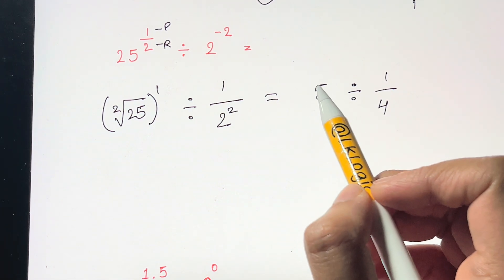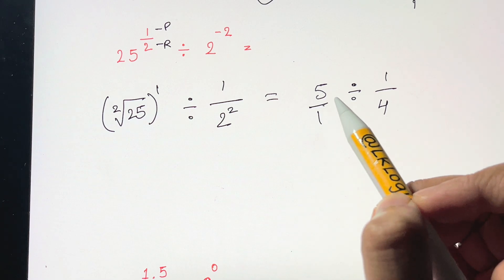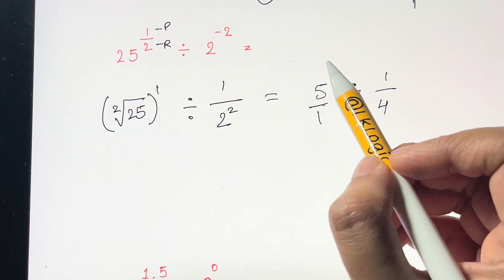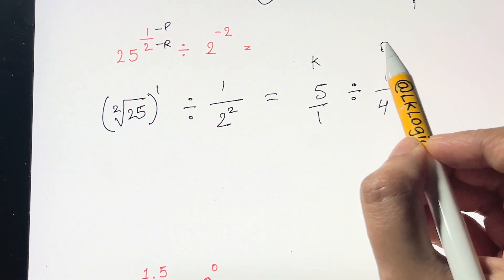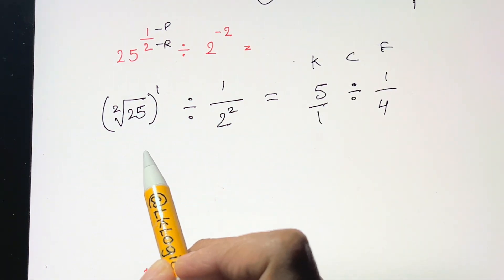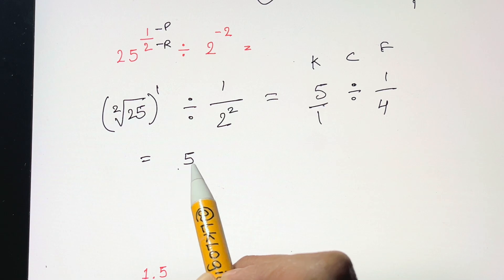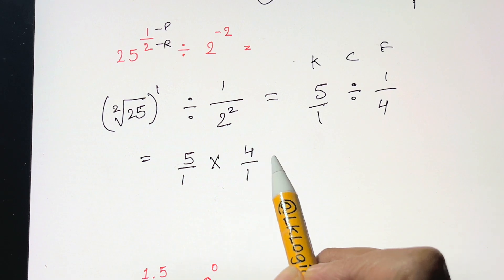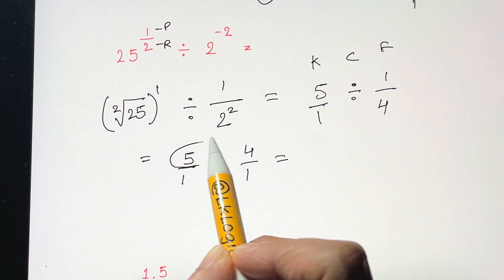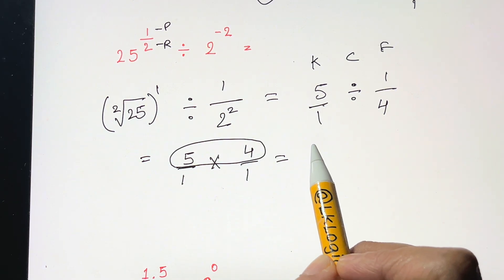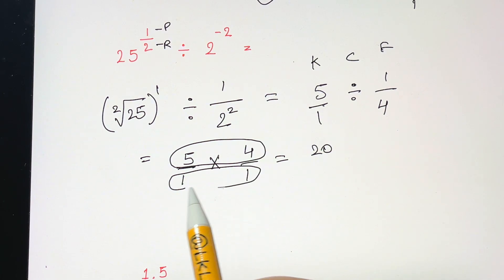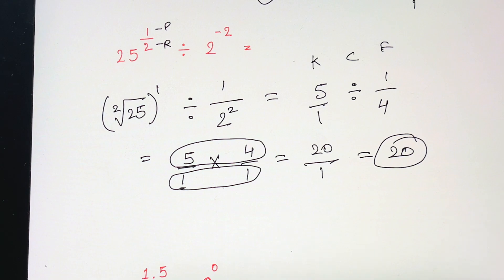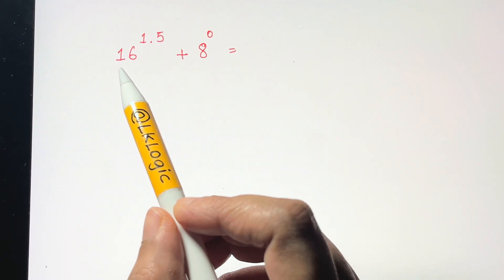Now we have division of fractions. We'll use the KFC rule — Keep, Flip, and Change. Keep the first fraction (5 over 1), flip the second fraction (4 over 1), and change the sign to multiplication. Multiplying: 5 times 4 is 20, and 1 times 1 is 1. The answer is 20.